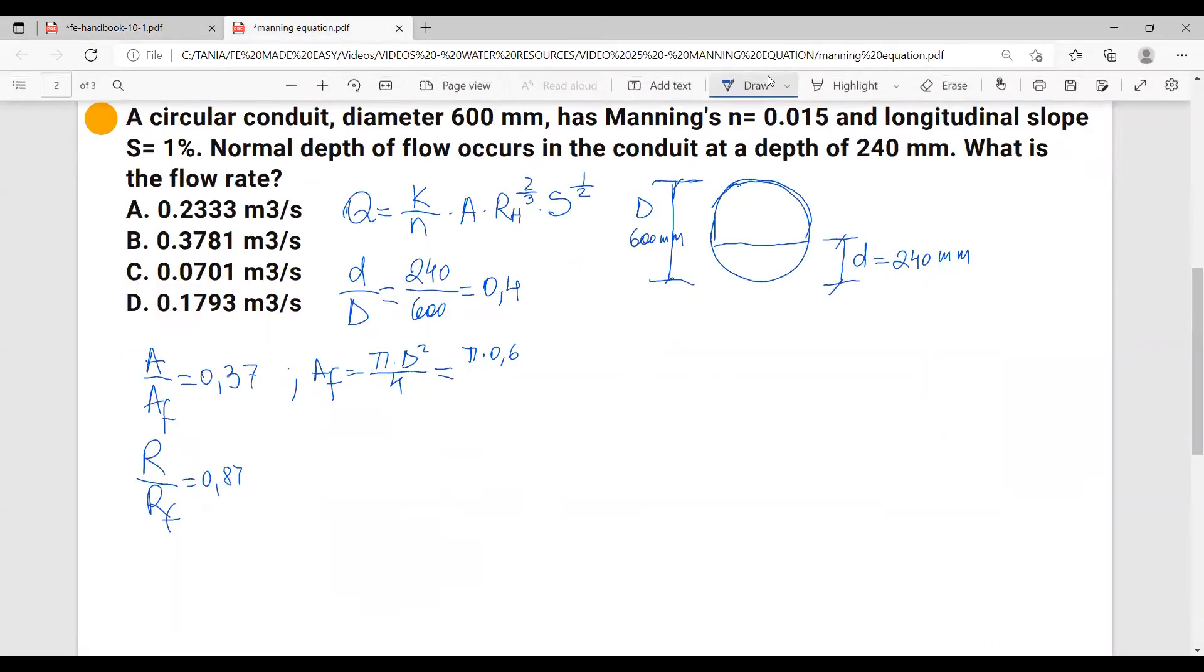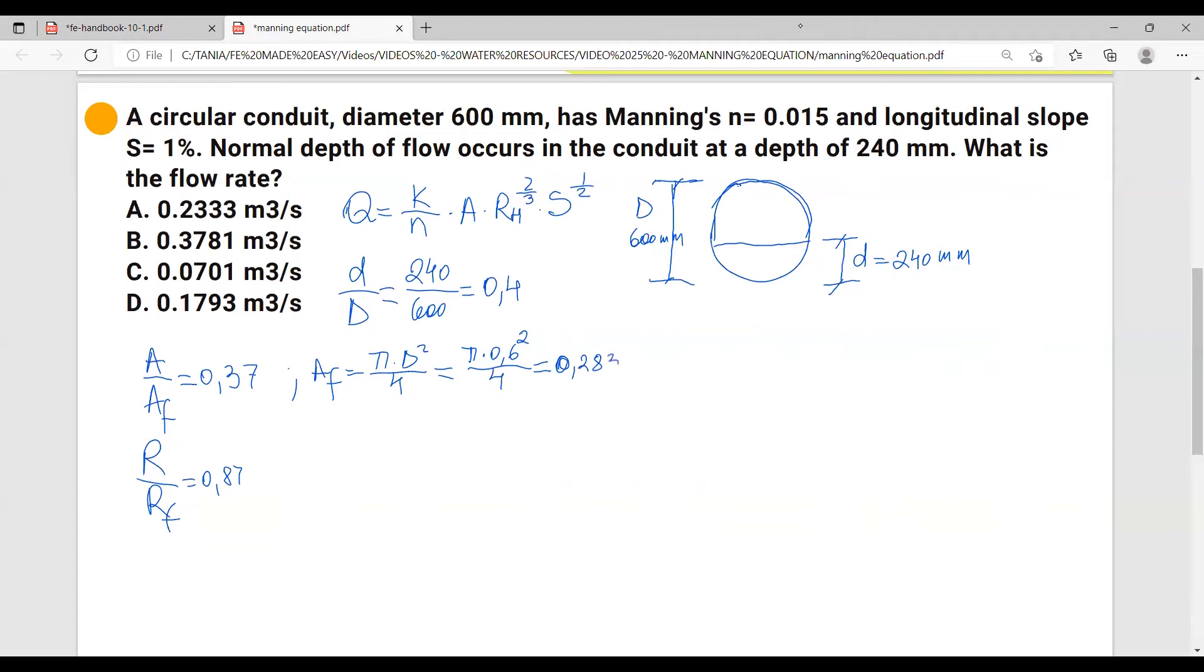So we'll have diameter squared over 4, and this equals to 0.6 squared pi multiplied, 4 divided, equals 0.283 meters squared.